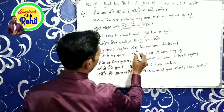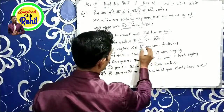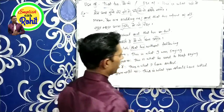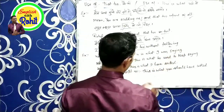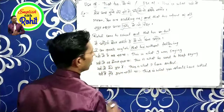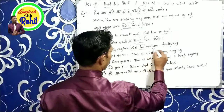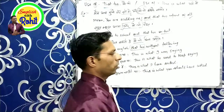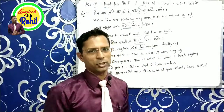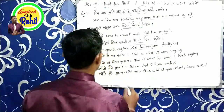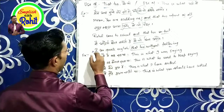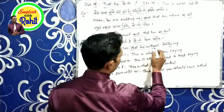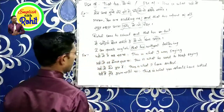I can speak English, that too without faltering. Falter means 'atak atak ke bolna' — to speak hesitatingly. Because 'without' is used as a preposition here, we use the gerund 'faltering'. I can speak English, that too without faltering.